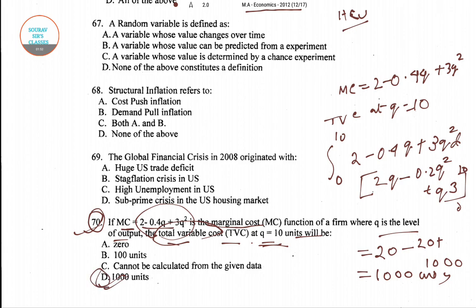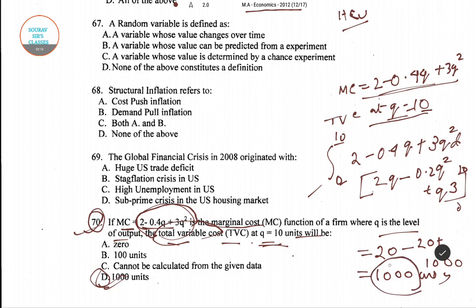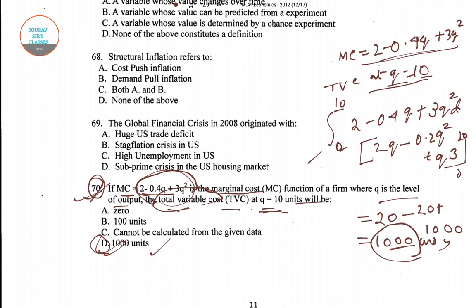So we have found the TVC to be 1000 units, and for question number 70, option D is the right answer. To recap: we wrote down the marginal cost equation, took the definite integral from 0 to 10, and found the value of TVC to be 1000. Now we'll go to question number 71.